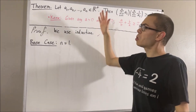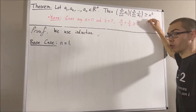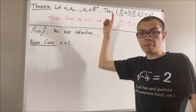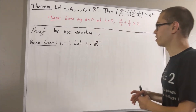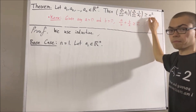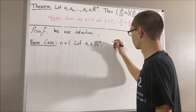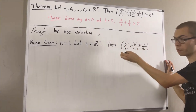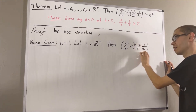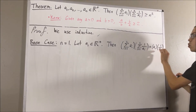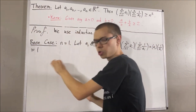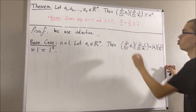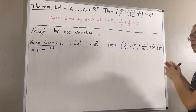And we're trying to show, for all lists consisting of one positive real number, this inequality holds, where we have n equal to 1. So, let's give ourselves an arbitrary list consisting of one positive real number. Our whole goal from here is to show that this inequality holds where n equals 1. We know that the sum from i equals 1 to 1 of ai is just equal to a1. Now, a1 times 1 over a1 is just equal to 1, and 1 is equal to 1 squared. So, we have shown that this is greater than or equal to 1 squared. In other words, we have shown this is true where n equals 1. So, this completes the base case.